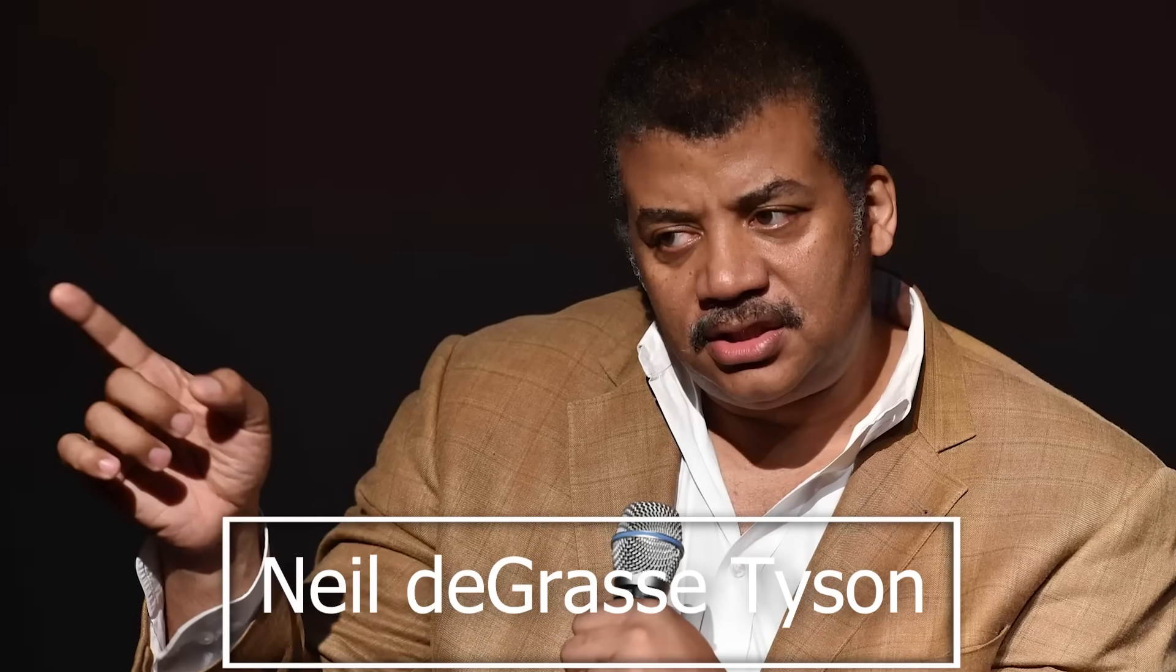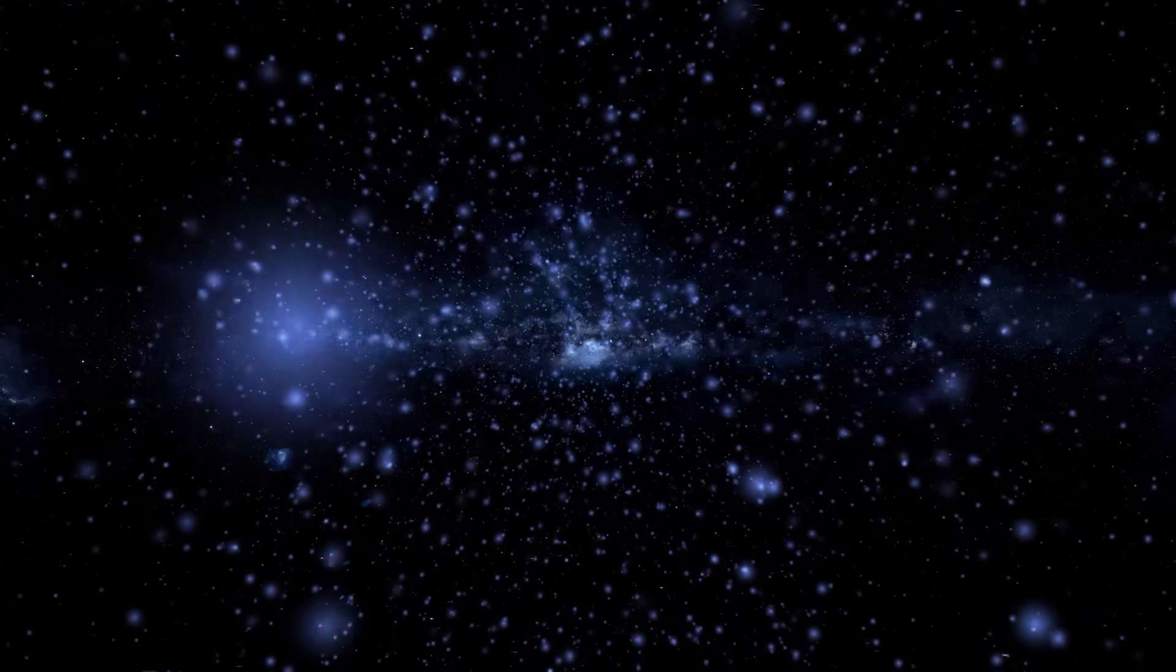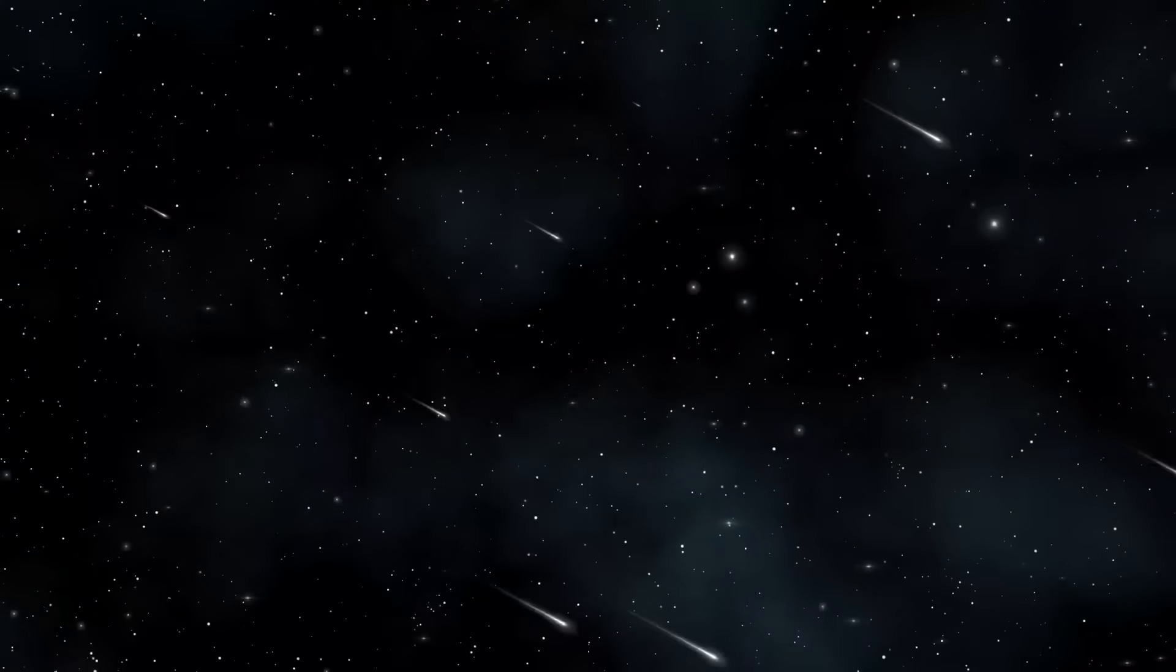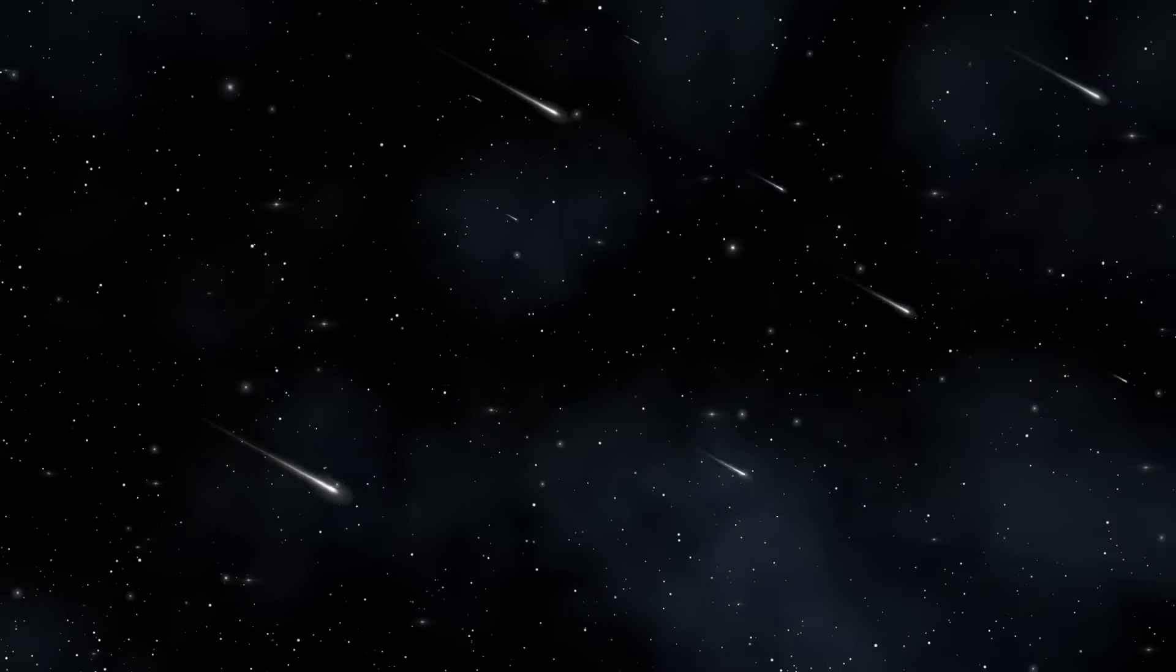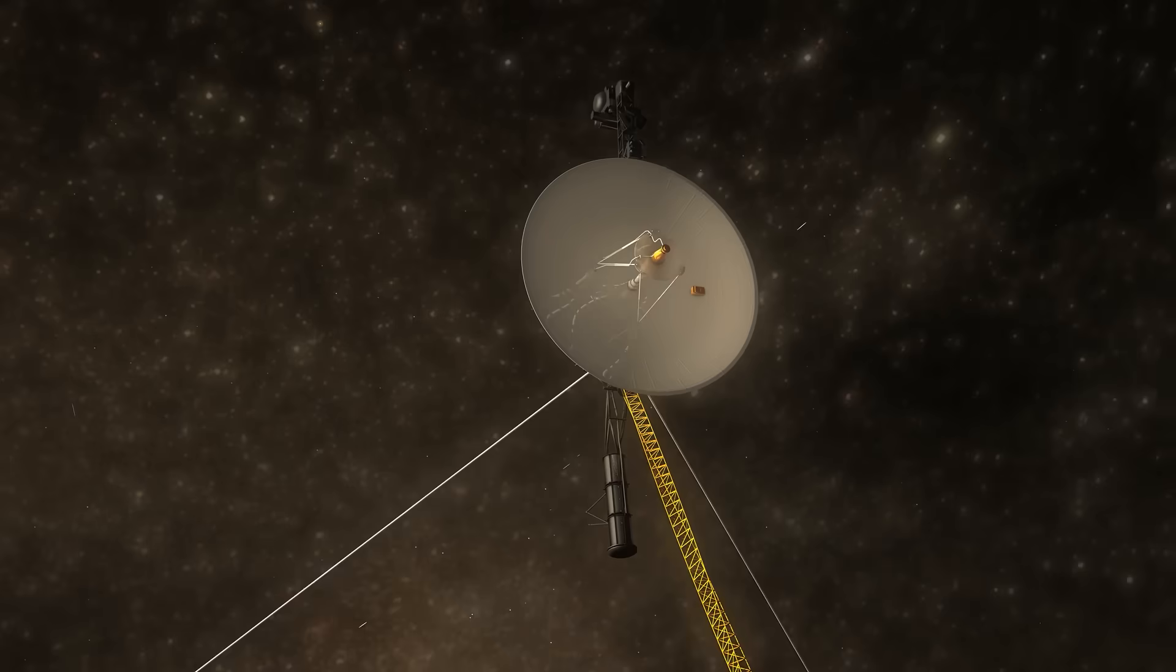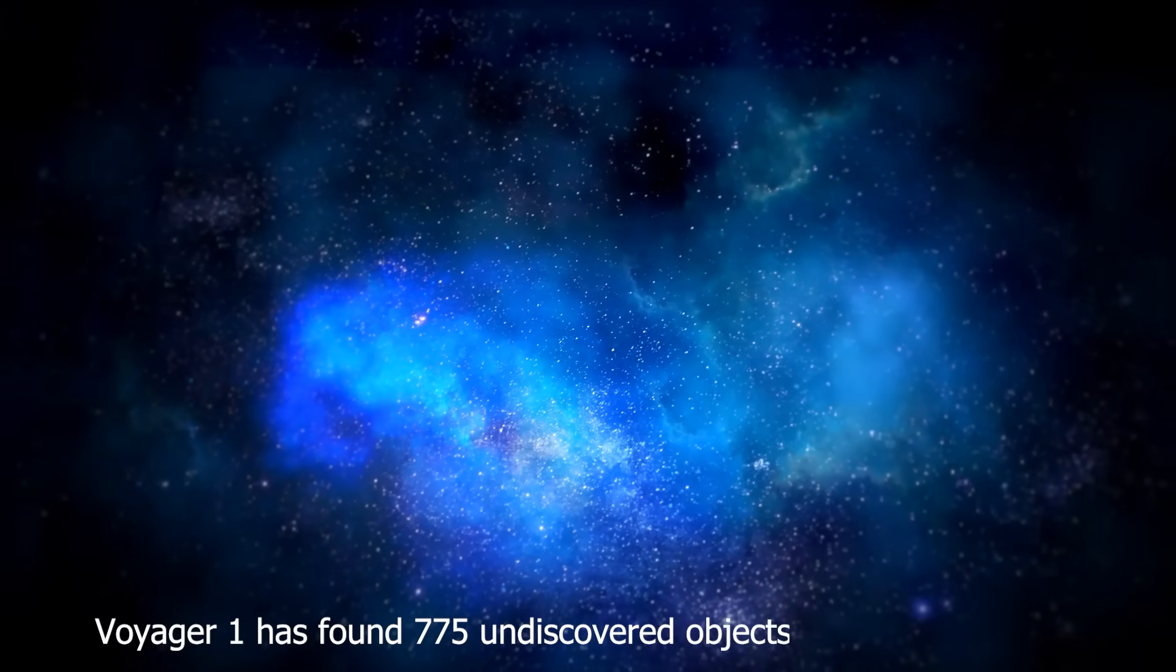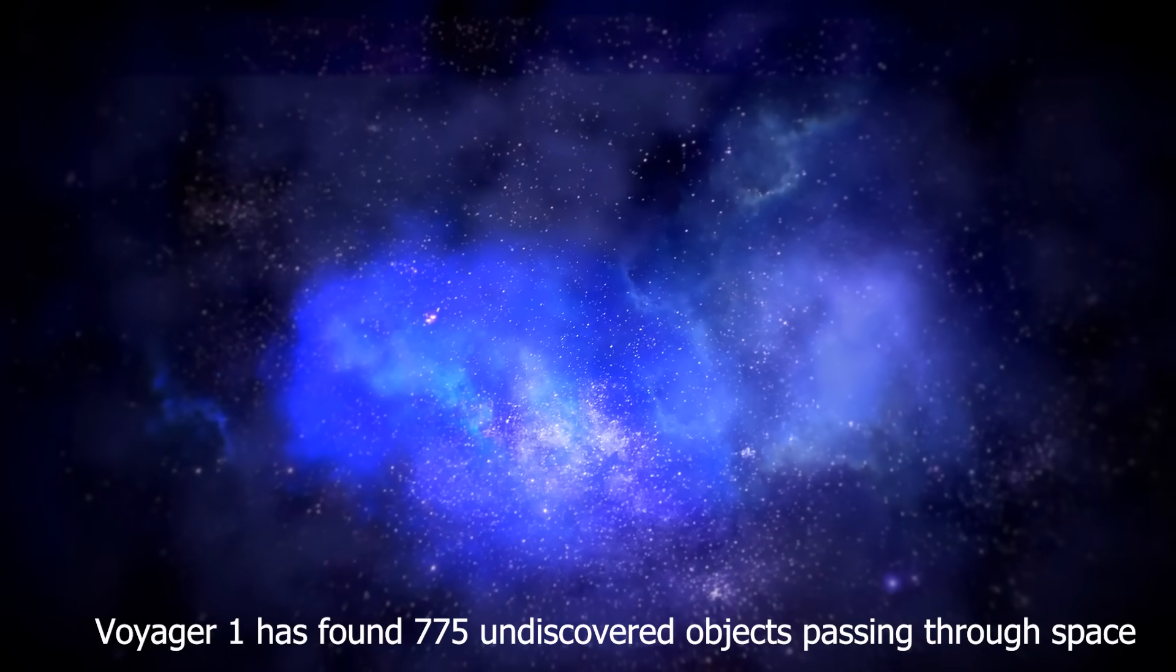In an interview, well-known American astrophysicist Neil deGrasse Tyson forewarned that humans may discover things in space that will test our comprehension. Amazingly, Voyager 1 has found 775 undiscovered objects passing through space.